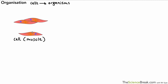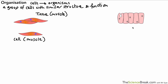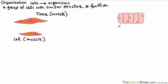If we put a bunch of muscle cells together, we would call this a tissue — so muscle cells joining together gives us muscle tissue. A tissue is a group of cells with similar structure and function that work together.